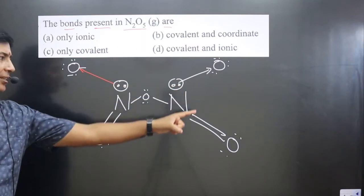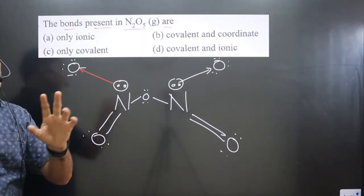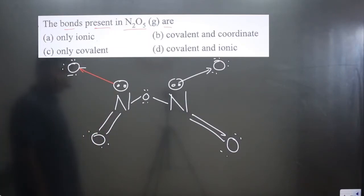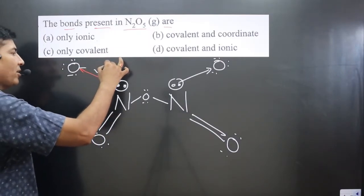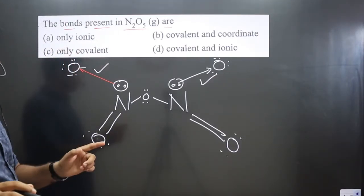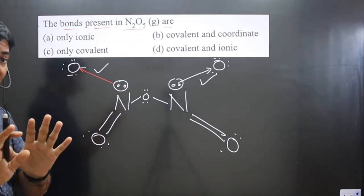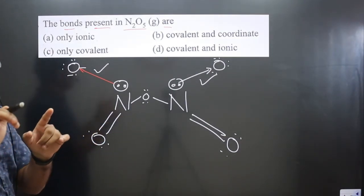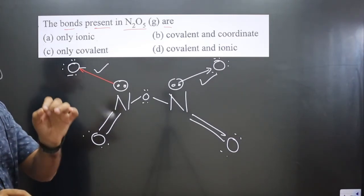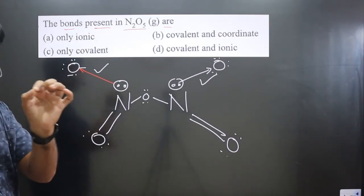You can see in this entire compound, nitrogen and oxygen are present—both are non-metals, so obviously covalent bonding will be there. But here we have the coordinate bond also. Coordinate bond is a special type of covalent bond in which transfer of electron pair takes place—sharing of the electron pair from one atom to another atom.